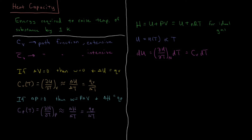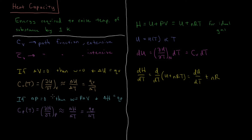For a constant pressure process, looking at the change in enthalpy with temperature, that's d/dT of U plus NRT. This gives dU/dT plus NR. We've defined dU/dT as approximately the constant volume heat capacity CV, and dH/dT is the constant pressure heat capacity CP. So replacing those terms, we have CP equals CV plus NR. There's a nice relationship: the difference between them is just the number of moles times the gas constant.